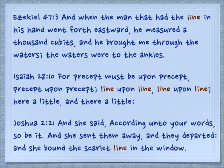From Isaiah 28:10, a verse you probably know: 'For precept must be upon precept, precept upon precept, line upon line, line upon line, here a little, there a little.' Again, a spoken word or a written word — a sentence.